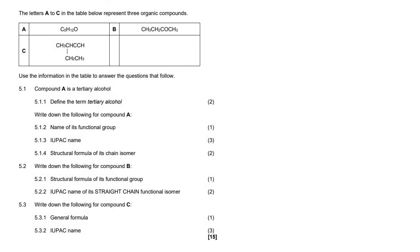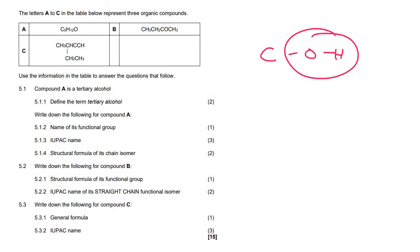In 5.1.2 we need to write down the functional group of A. Now A is a tertiary alcohol. An alcohol has this OH part, which is called a hydroxyl group.